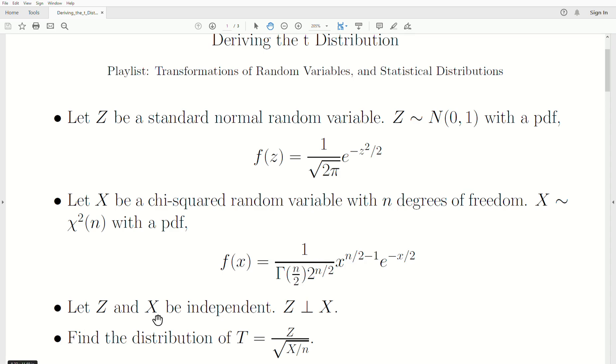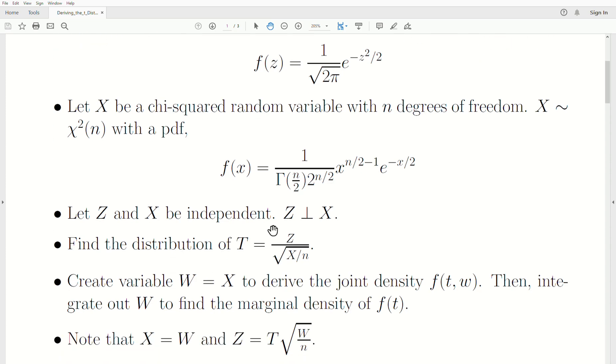We're going to assume that Z and X are independent and we want to find the distribution of T, where T is Z divided by the square root of X over n. So it's a standard normal divided by the square root of a chi-squared divided by its degrees of freedom, and that's what a t-distribution is.